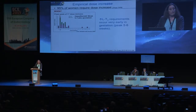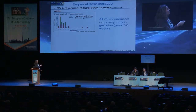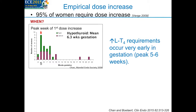Studies show that the majority of women do require a dose increase in pregnancy, which is not surprising based on the physiological changes discussed earlier. A relatively small study nicely illustrates that the peak week of first dose increases is around 5 to 6 weeks, in women who were hypothyroid due to autoimmune thyroid disease, thyroidectomy, or thyroid cancer.